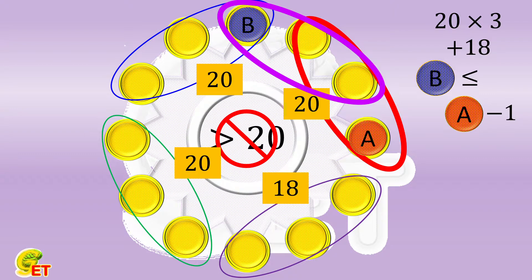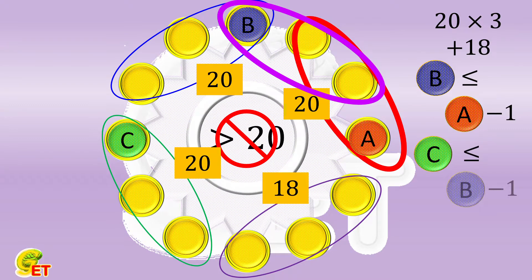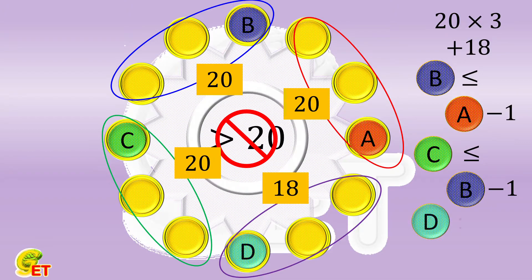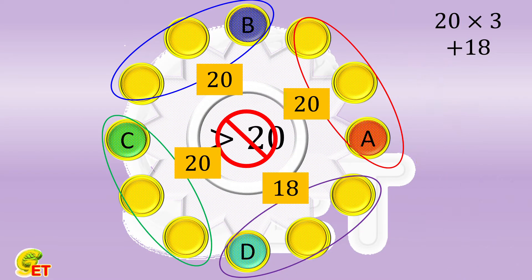For the same reasons, c cannot be bigger than b minus 1, and d cannot be bigger than c minus 1. Putting these three inequalities together, we get that d is not bigger than a minus 3.